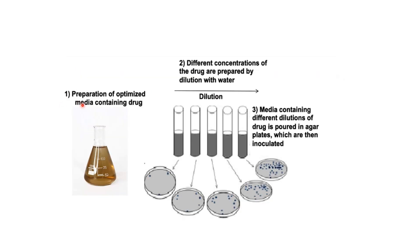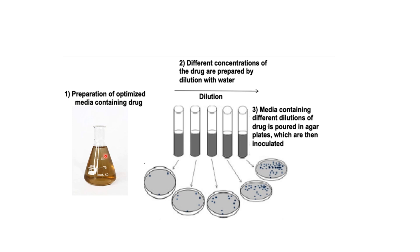The first step is preparation of optimized media containing the drug. To Mueller Hinton agar media we will add a known volume of antibiotic. Different concentrations of the drugs are then prepared by dilution with water, so that we get different concentrations of antibiotics in different test tubes.